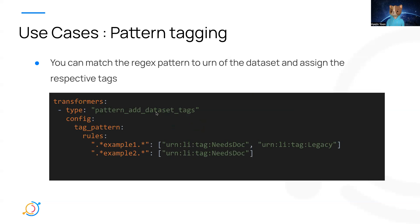For example, you might want to add a 'needs docs' tag to datasets whose names contain 'example1' or 'example2', and add a 'legacy' tag to datasets containing 'example1'. You can define tag patterns and rules under config using regex matching against the dataset URN.